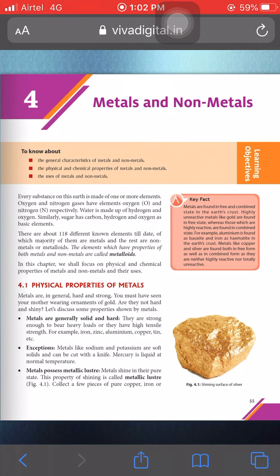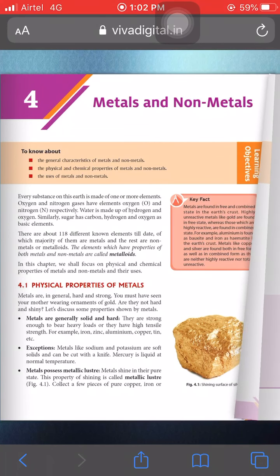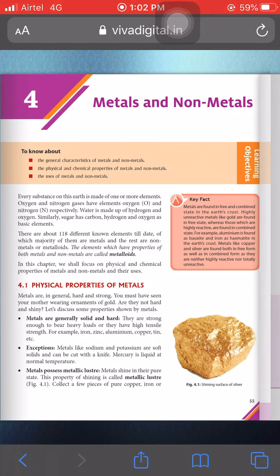There are some exceptions — not all metals are hard or strong. For example, sodium and potassium are metals but they are soft solids that can be cut with a knife. Mercury is also a metal but it is liquid at room temperature.